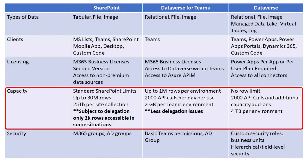With Dataverse for Teams capacity, if the application you're building doesn't expect to go over 1 million records per environment, then Dataverse for Teams is a good choice. The limit is 1 million records or 2 gigabytes per environment, whichever comes first, and right now there's really no way to add additional capacity. So you have to make sure the apps you're building will fall under those capacity metrics. We also have a limit in Dataverse for Teams of 2,000 API calls per user per day — reading or writing data against your table counts toward that limit.